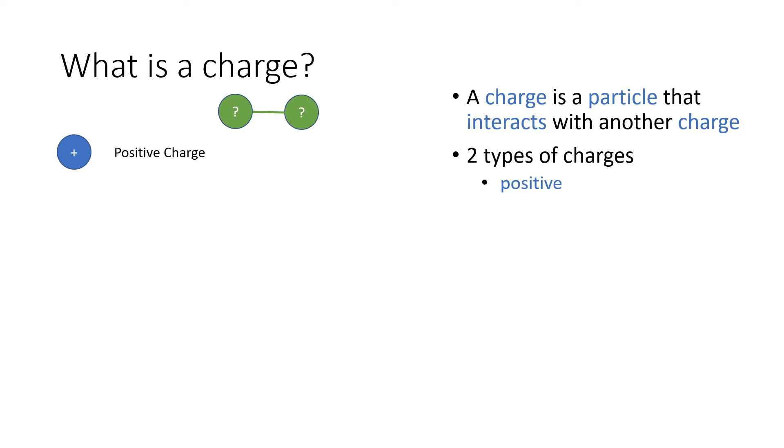And so we begin with this question of what is a charge? A charge is a particle that interacts with another charge. So there are two types of charges. There are positive charges, represented in the blue, and negative charges, represented as red.